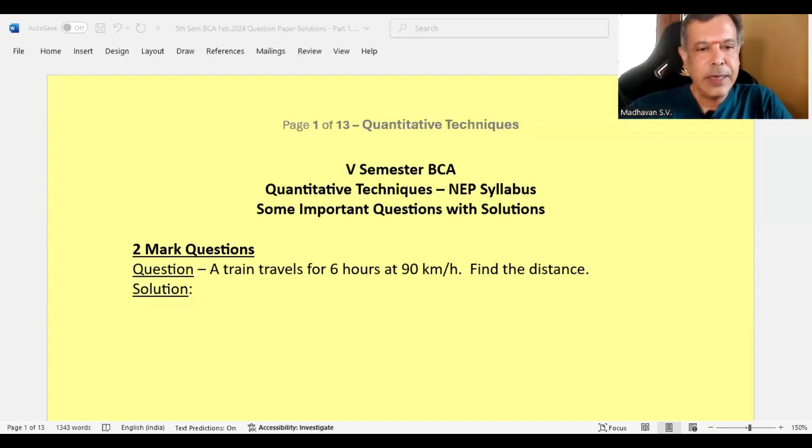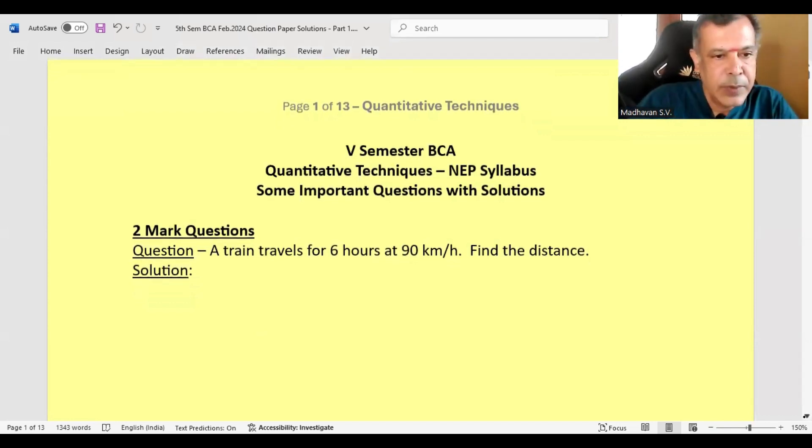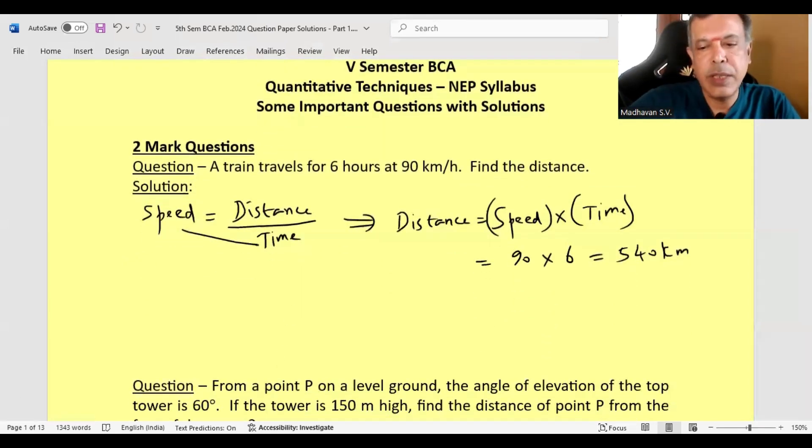The first question: a train travels for 6 hours at 90 km per hour, find the distance. Speed is distance traveled by time taken. So by cross-multiplying, we can write the distance formula as speed multiplied by time. Here speed is 90 km per hour and time is 6 hours, so the total distance will be 540 km. That is the solution for this.